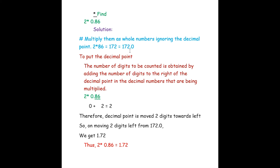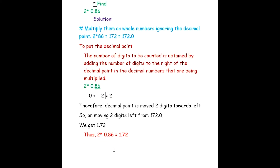Next we express 172 as a decimal number: 172.0. Now we place the decimal point in the appropriate place by counting the number of digits to the right of the decimal point in the numbers being multiplied. In 0.86, there are two digits to the right of the decimal point, so we move the decimal point two digits towards the left. From 172.0, moving two digits left gives us 1.72. Thus 2 into 0.86 is 1.72.